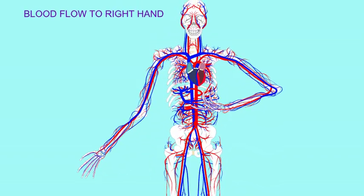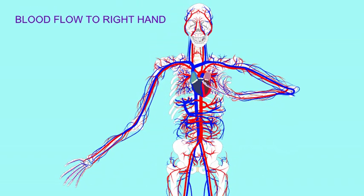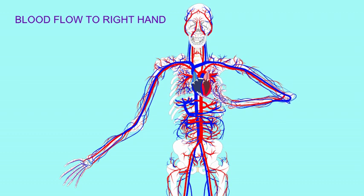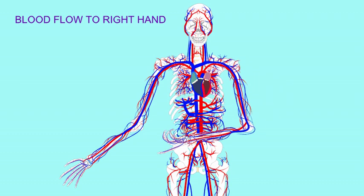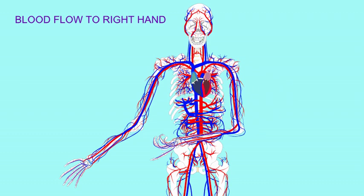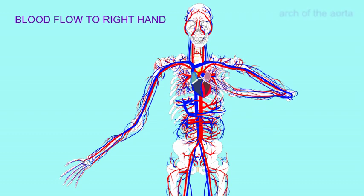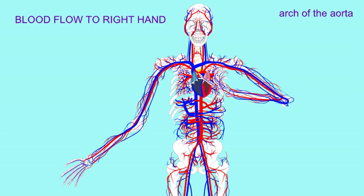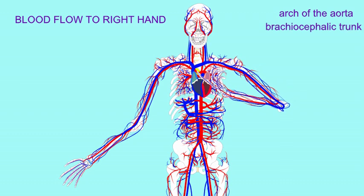If I was interested in sending blood from my left ventricle to my right arm, I would start off with the arch of the aorta, which leaves the left ventricle, but I would go immediately into the brachiocephalic trunk — this big artery that only exists on the right side. And because I'm going to the arm,